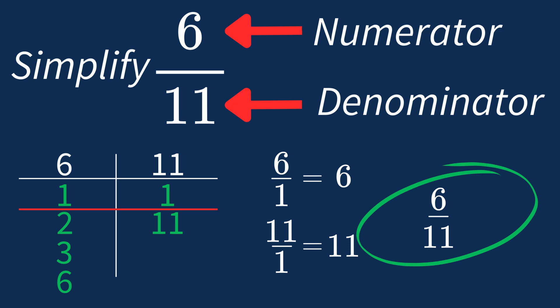In future, if the largest common factor is 1, you know that fraction is already in its simplest form.